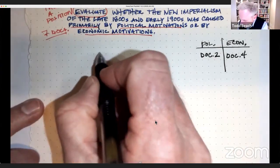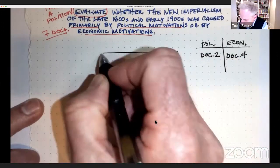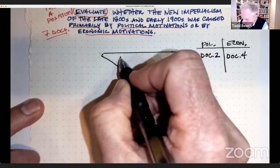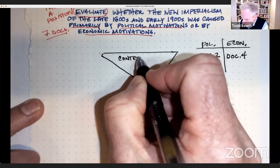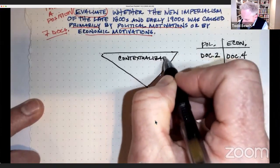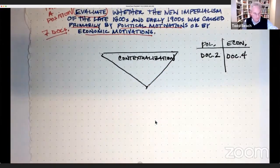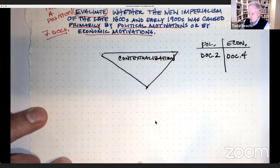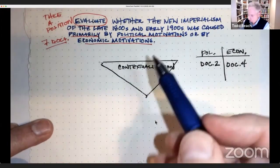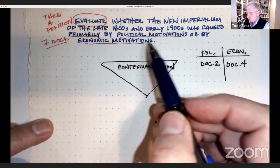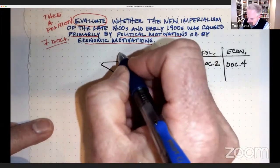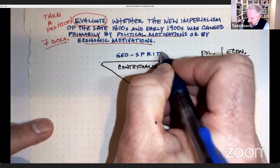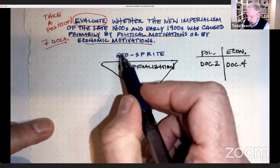So what will that essay look like? We want to begin broadly and then funnel down to the argument. This will be our contextualization paragraph. One of the things that I suggested to you is if you're not sure how to get into this prompt, you want to talk about new imperialism, the late 1800s and early 1900s. The acronym we've done on a couple videos is GeoSprite.